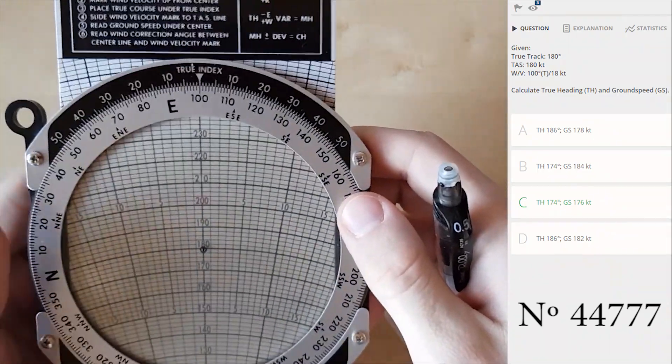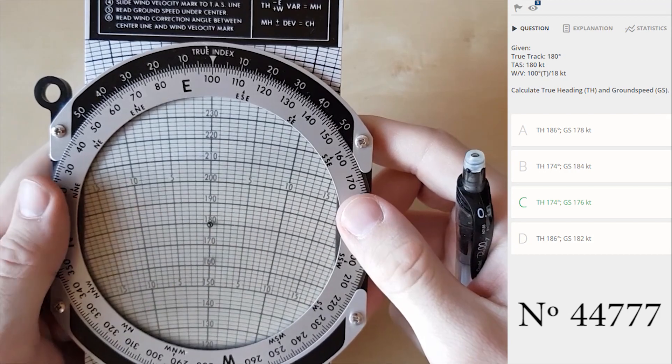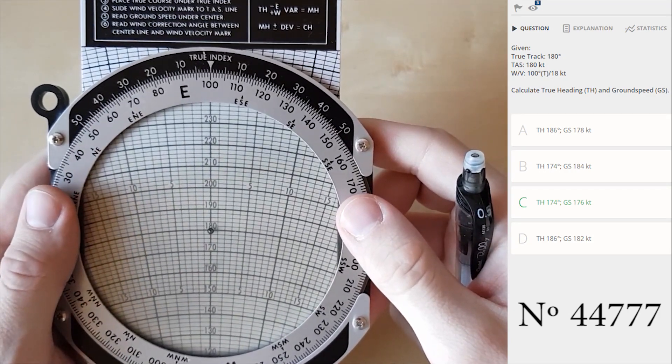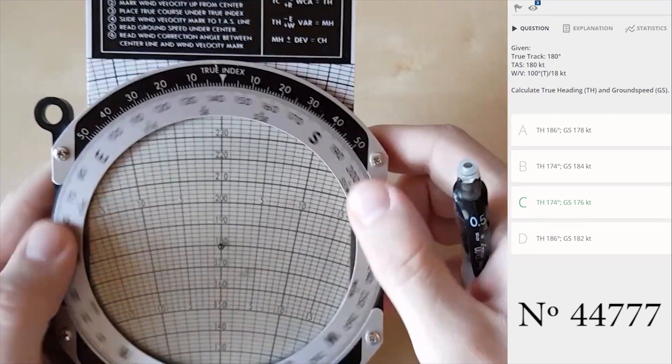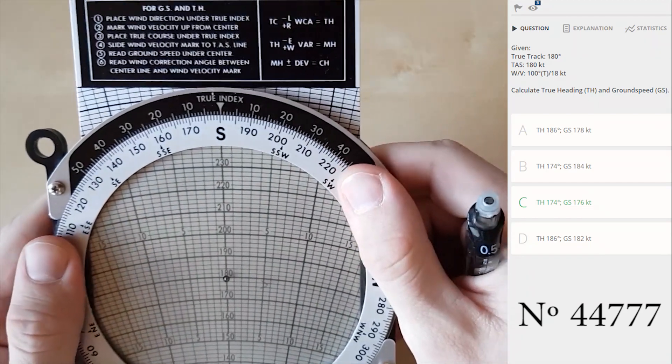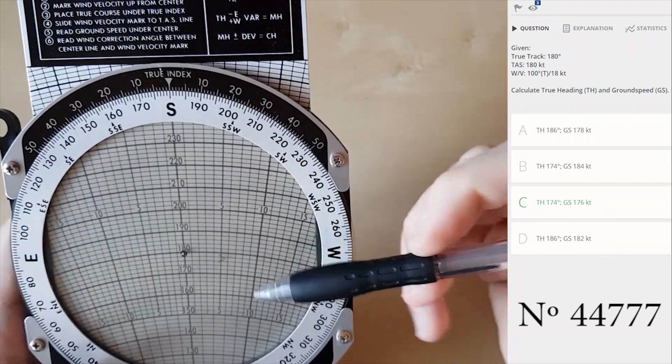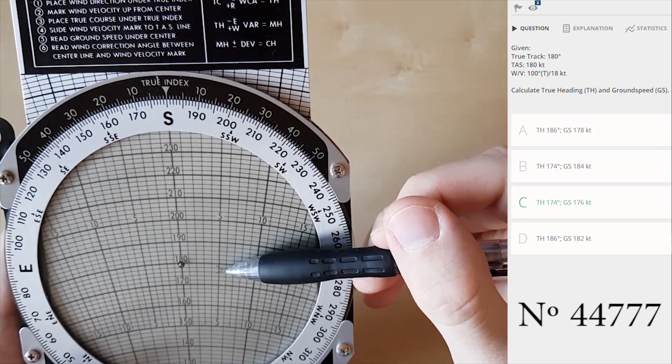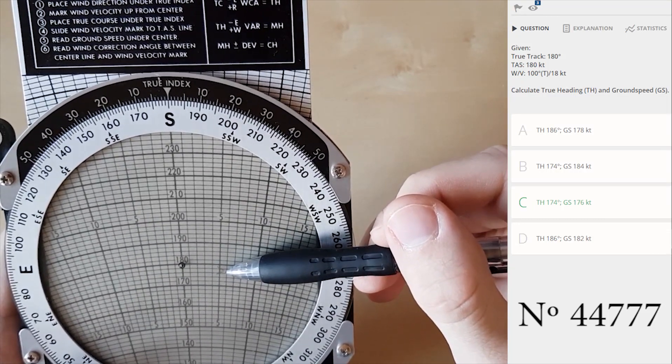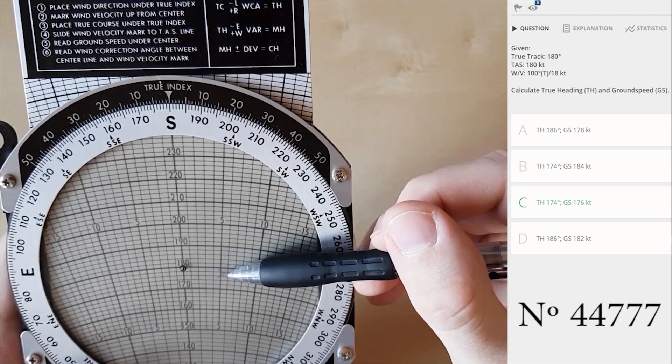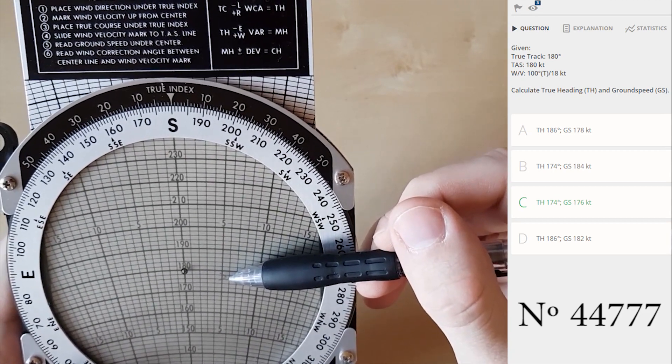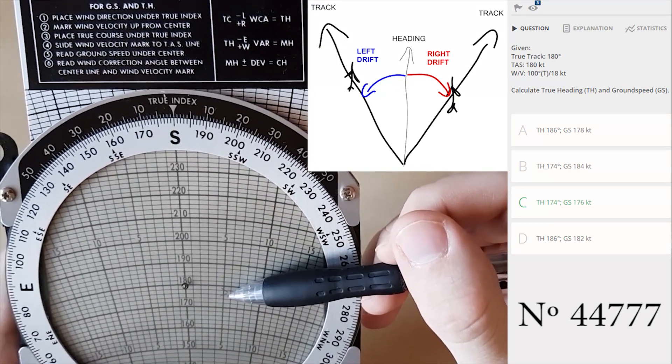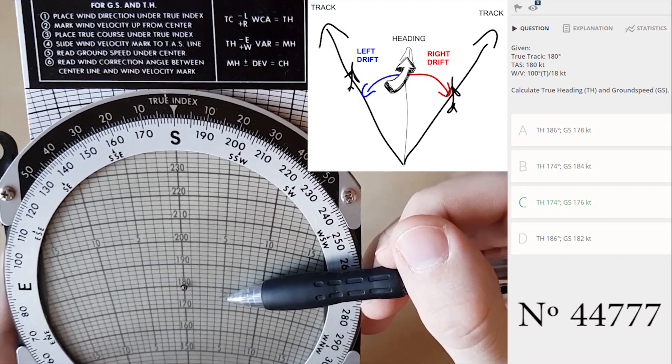Fourth step is to find true track which is 180 given by the question. Now you can see my mark move to this position and this means that we experience six degree right drift. And as you know, drift is from heading to track.